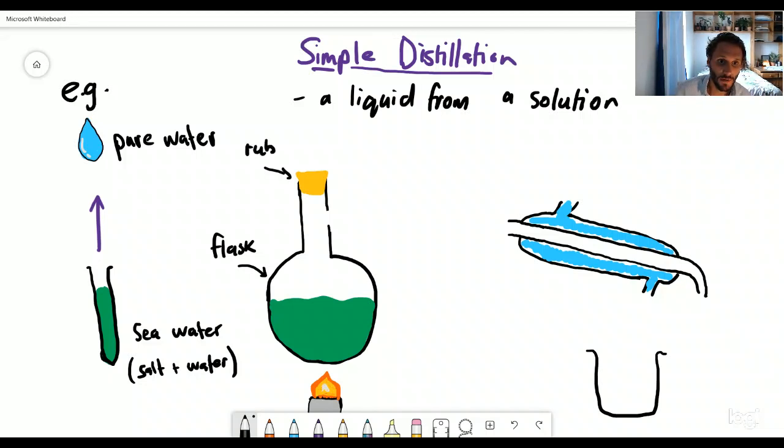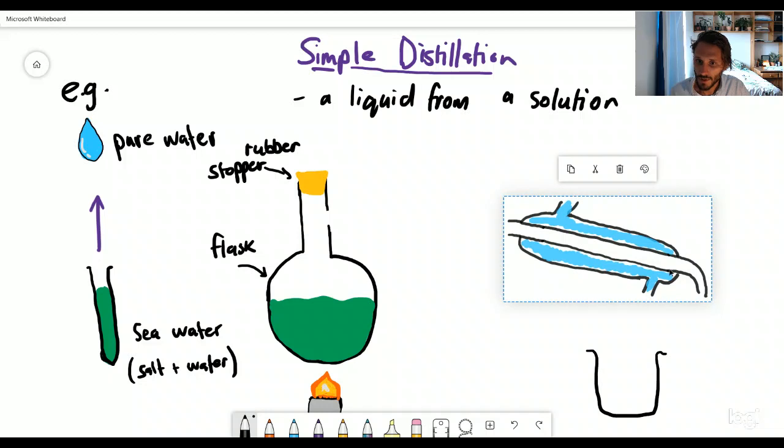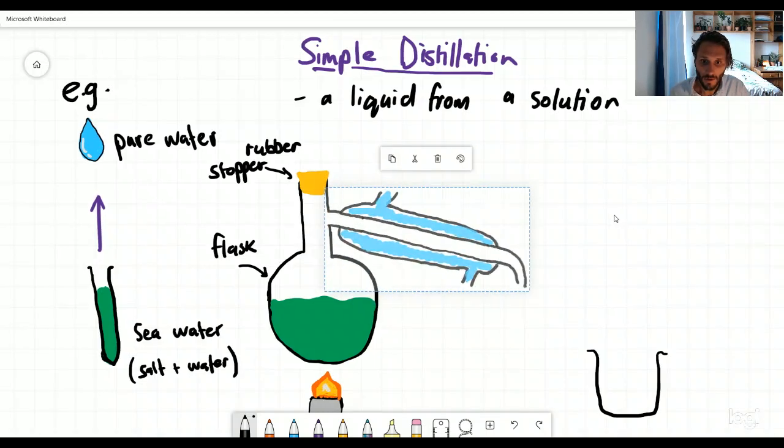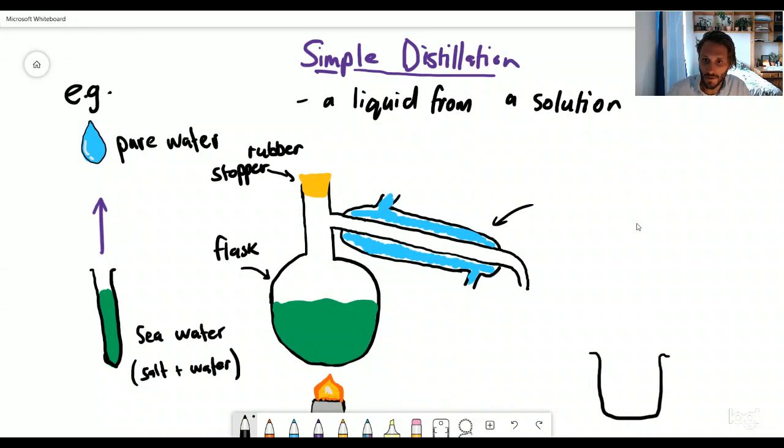You've got a rubber stopper over here that is going to seal everything inside the flask. And then we have this little thing over here, which I'm going to attach to my flask like that. And this device over here is called a condenser and it does exactly that. It's going to condense a gas into a liquid. And basically the condenser has two parts. It's got this pipe that's running down the middle and it's got this outside device called a water jacket.